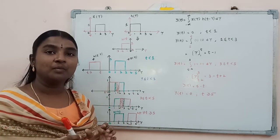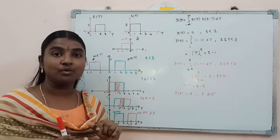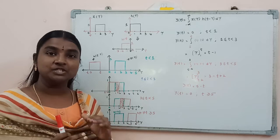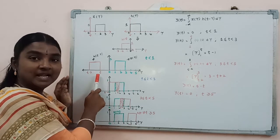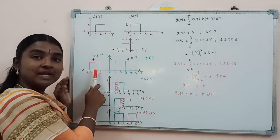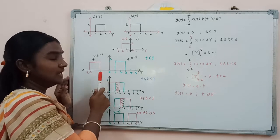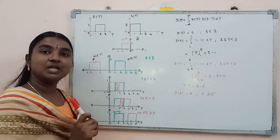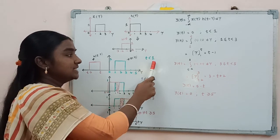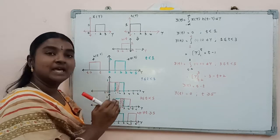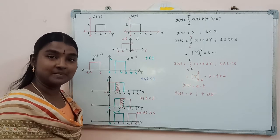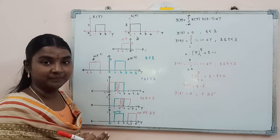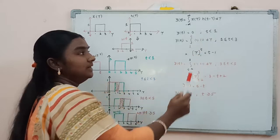In the next step, we draw both x(τ) and h(t-τ) on the same tau axis, considering the time shift t at its most negative value, so the signal comes into the second quadrant. Observing these signals, there is no overlapping area between x(τ) and h(t-τ). Therefore, the output y(t) = 0 when t < 1, covering all time shifts toward minus infinity.